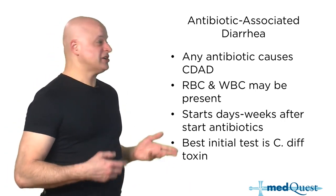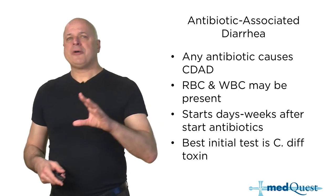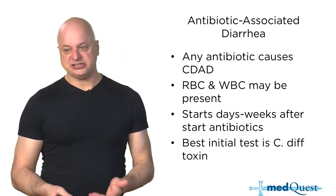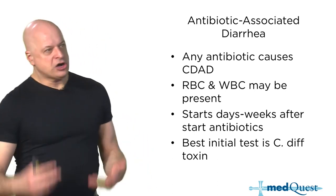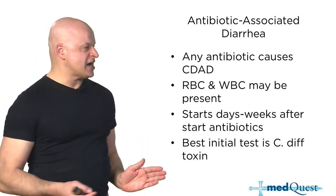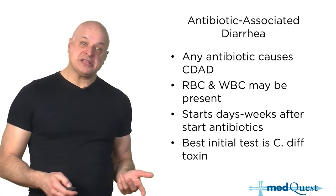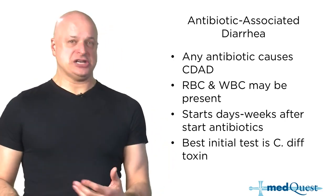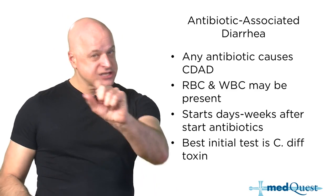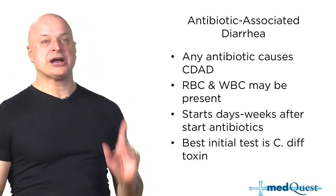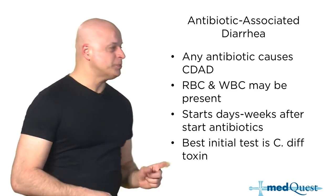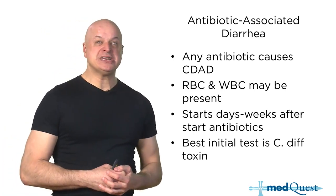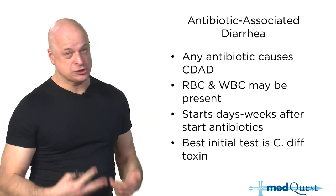The best initial test is a toxin. But it depends whether there's diarrhea, because one question you could get is an asymptomatic person on screening who has a C. diff toxin in their stool. That doesn't mean you have to treat it — it does mean the person needs to be on contact isolation, not airborne. The toxin doesn't necessarily mean you have to be treated unless you have diarrhea that goes with it.